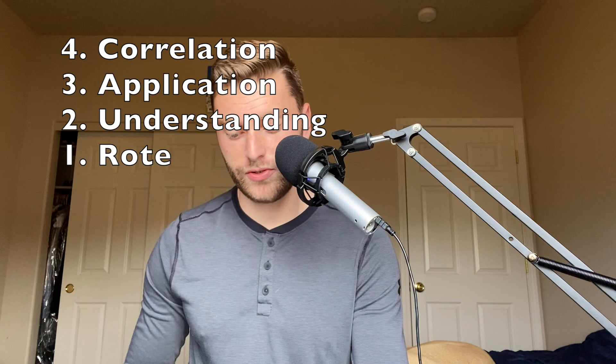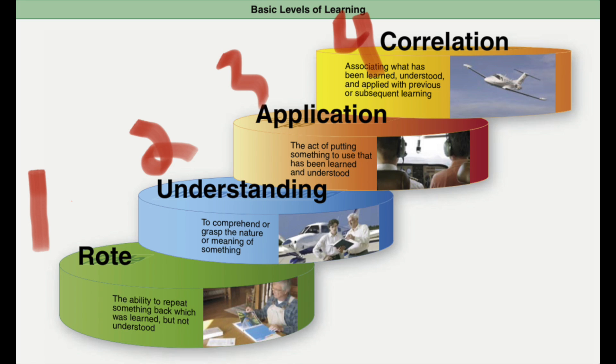The levels of learning outline how well you've learned certain concepts or information — it's not just that you've learned something and that's over. There are levels. Those levels are rote, understanding, application, and correlation. That's straight out of the Aviation Instructor's Handbook, Chapter 2, page 13, which has a nice diagram on different levels.